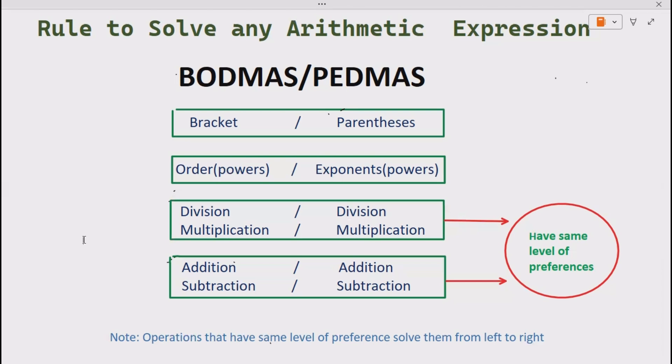What does it mean? It means whenever you are solving an arithmetic expression and both multiplication and division are present in your expression at the same time, solve that operation first that comes first going from left to right. Same is for addition and subtraction.